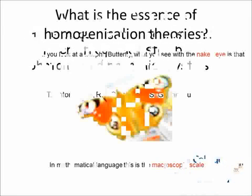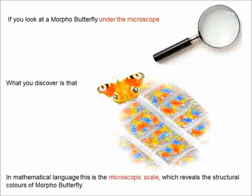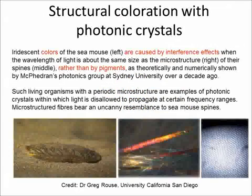In the context of electromagnetic waves, homogenization is well illustrated in nature, as is the case for this morpho butterfly — where to the naked eye, this is what you see. This is the equivalent of the macroscopic scale. If you look at a morpho butterfly under the microscope, you discover its microscopic structure. Similarly, iridescent colors of the male peacock's tail feathers and the sea mouse are caused by interference effects, rather than by pigments.